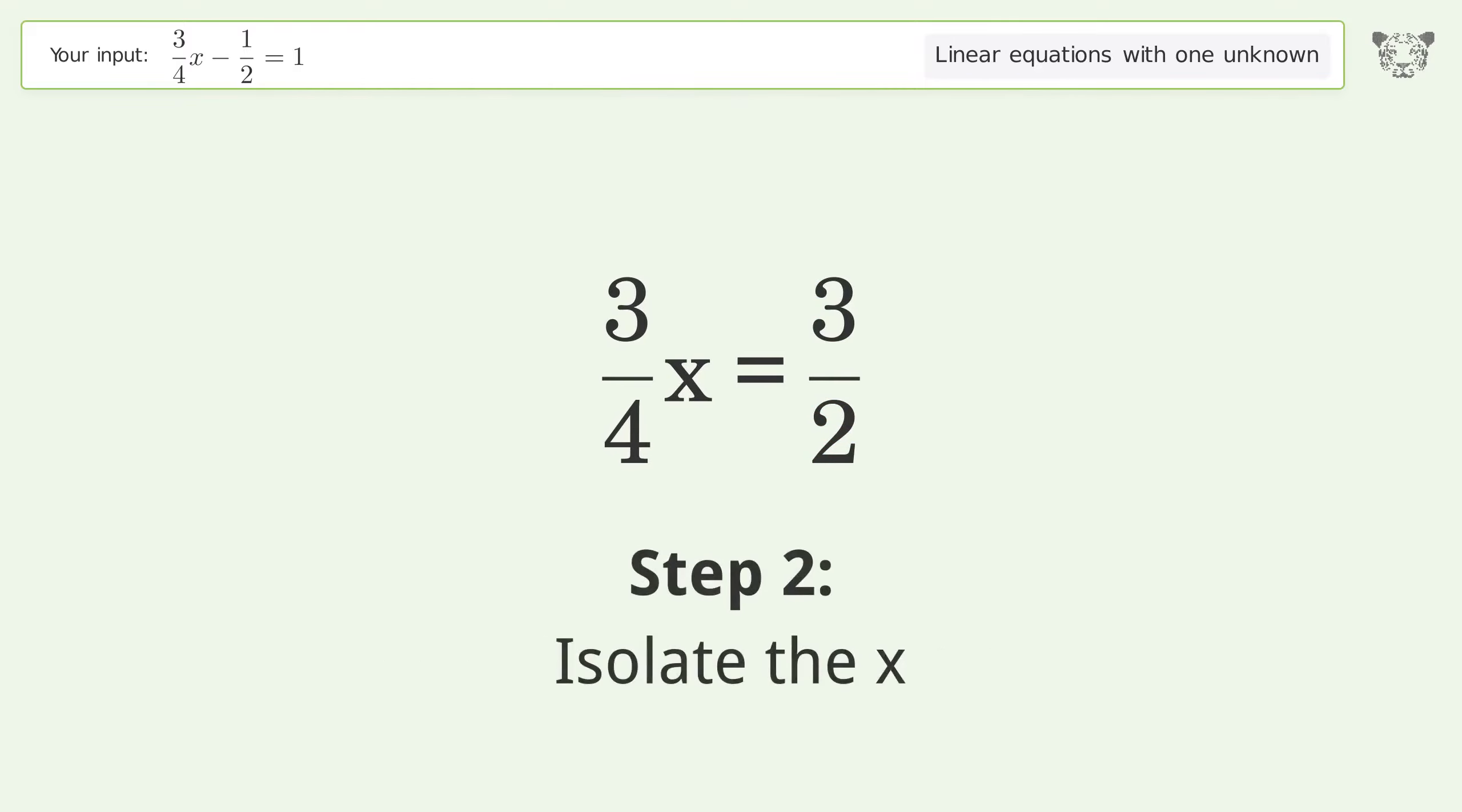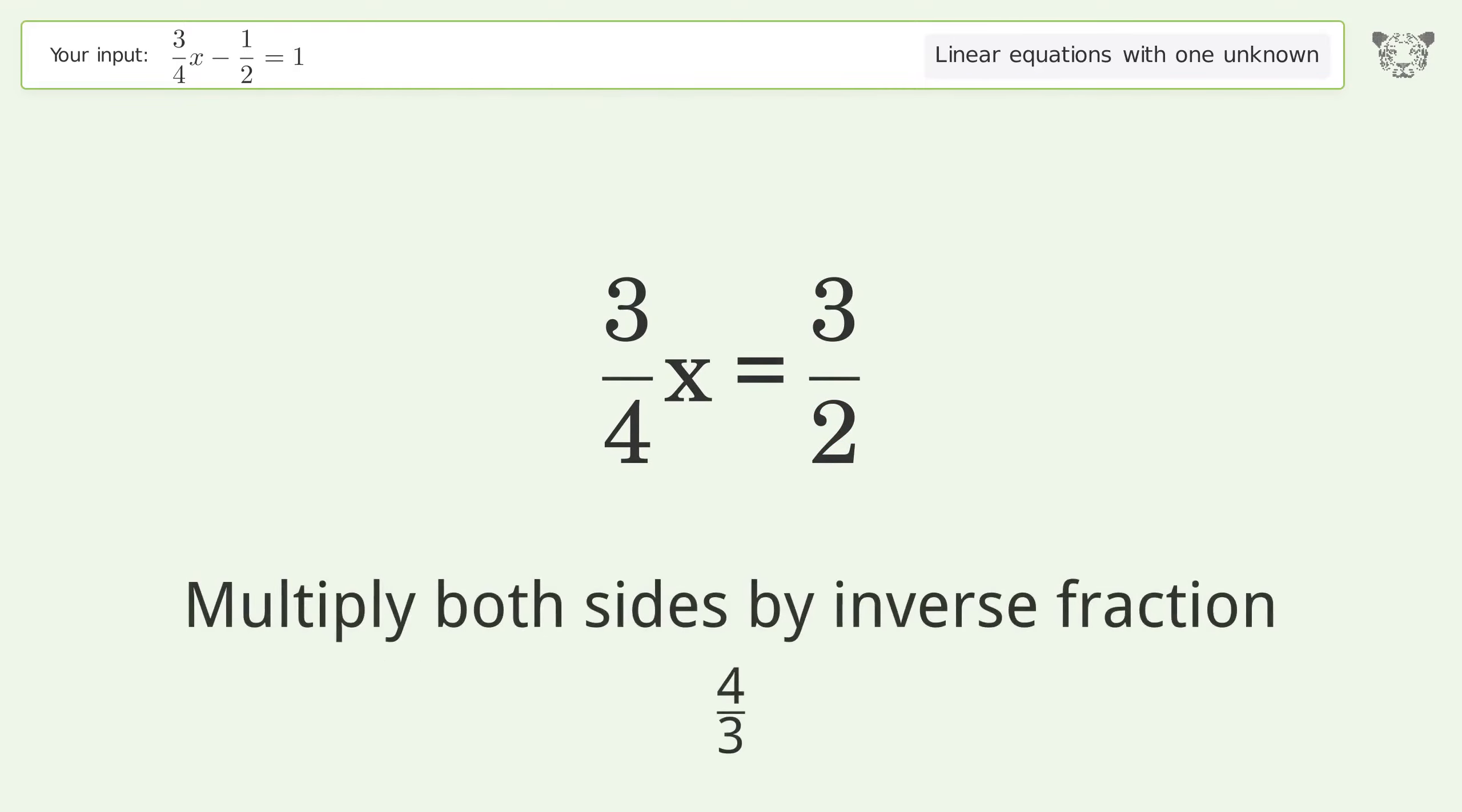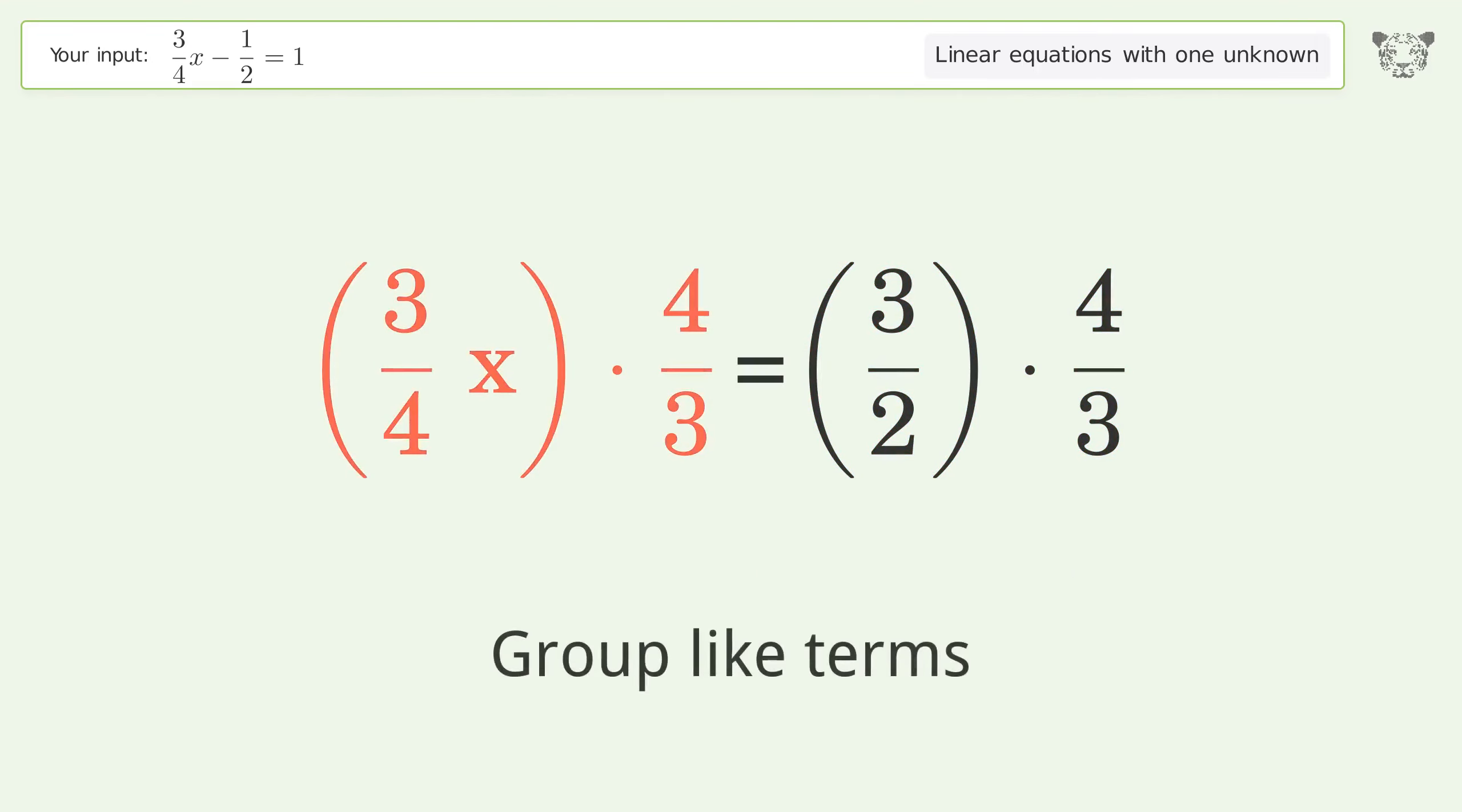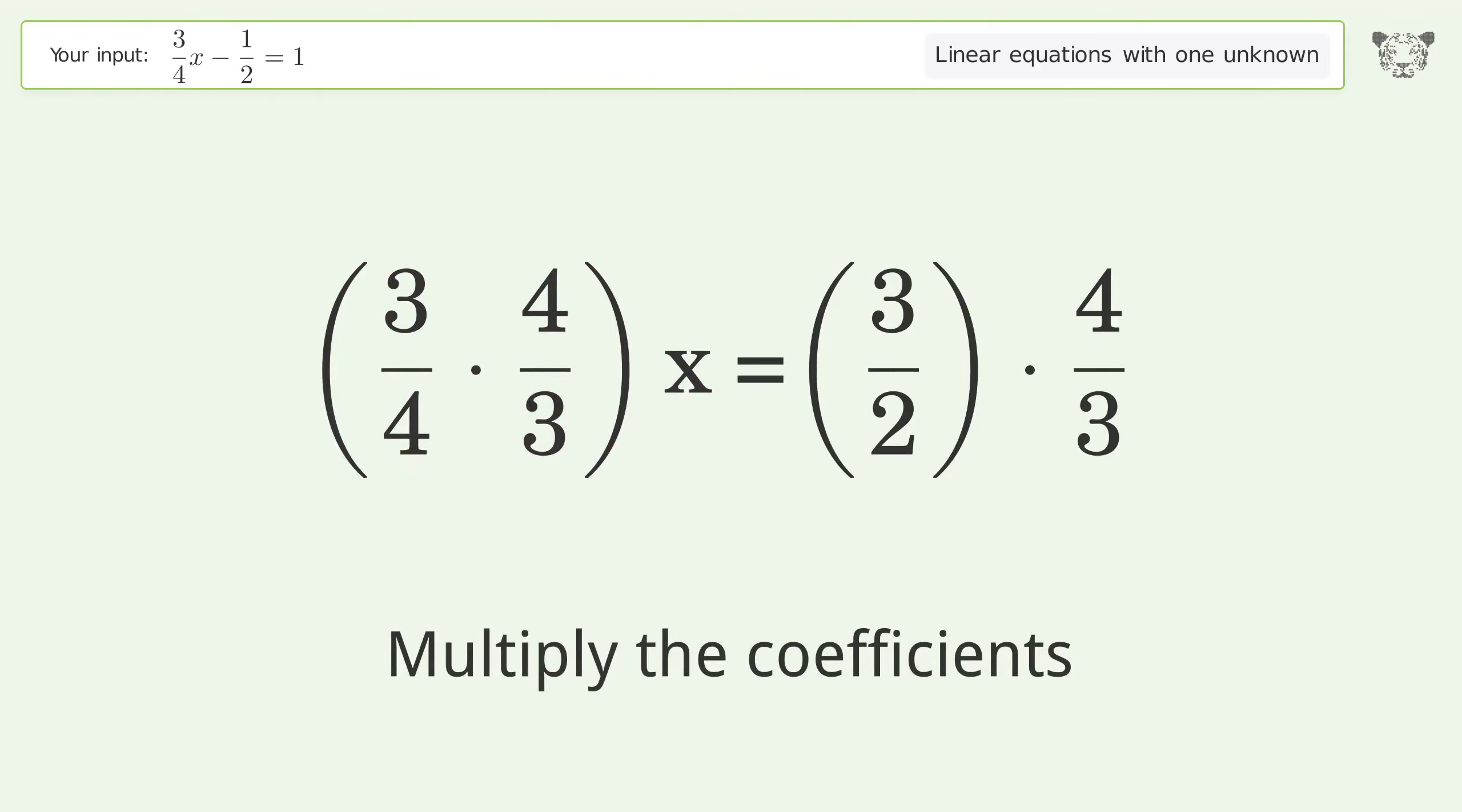Isolate the x. Multiply both sides by the inverse fraction 4 over 3. Group like terms. Multiply the coefficients.